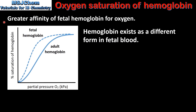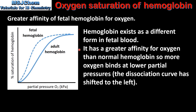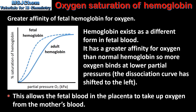Finally, we look at the greater affinity of fetal haemoglobin for oxygen. Haemoglobin exists as a different form in fetal blood. It has a greater affinity for oxygen than normal haemoglobin, so more oxygen binds at lower partial pressures. If we look at the graph, we can see that the dissociation curve has shifted to the left. This allows the fetal blood in the placenta to take up oxygen from the mother's blood.